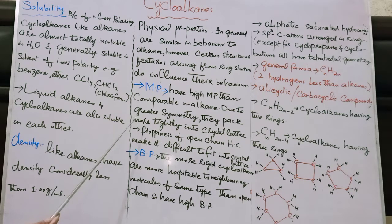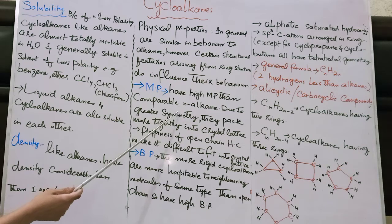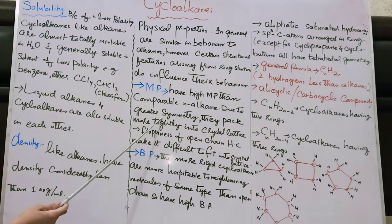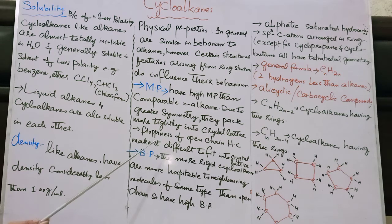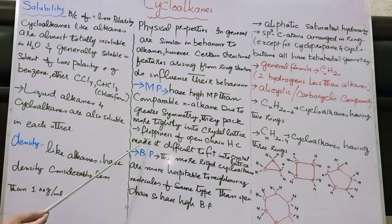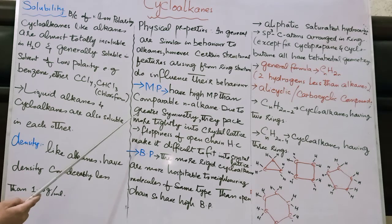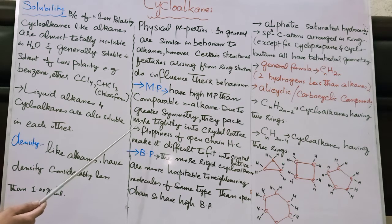Looking at melting point: cycloalkanes have higher melting points than comparable n-alkanes. The reason is that cycloalkanes have greater symmetry — a more symmetrical structure — so they pack more tightly into crystal lattices. In contrast, the floppiness of open-chain hydrocarbons makes it difficult to fit them into crystal lattices. The tighter packing increases intermolecular forces, requiring more temperature to melt.